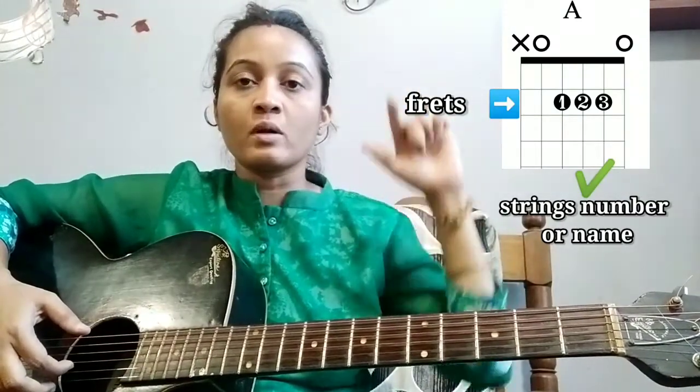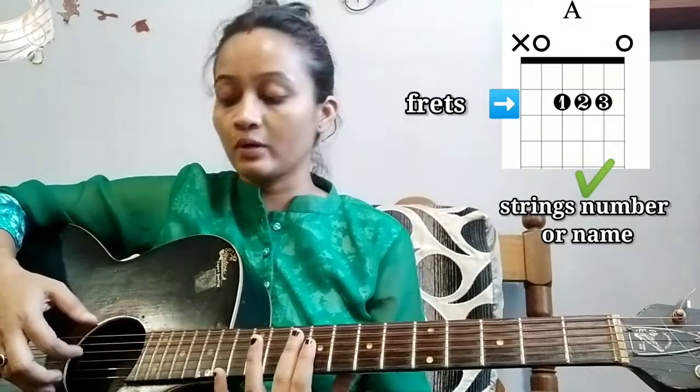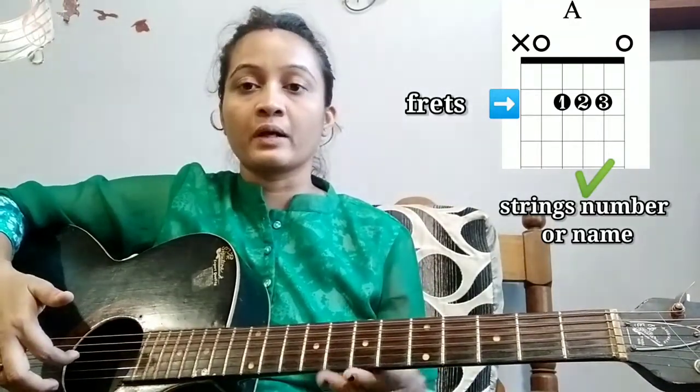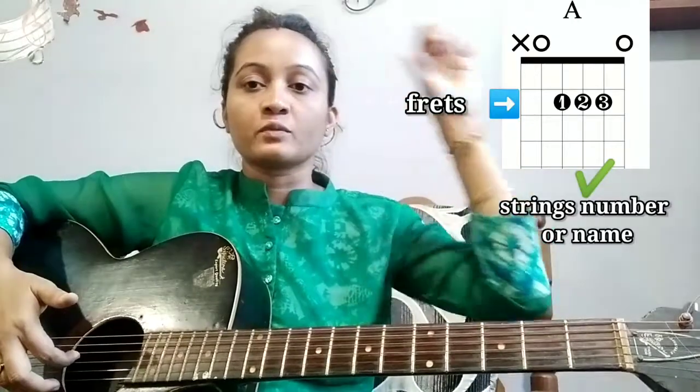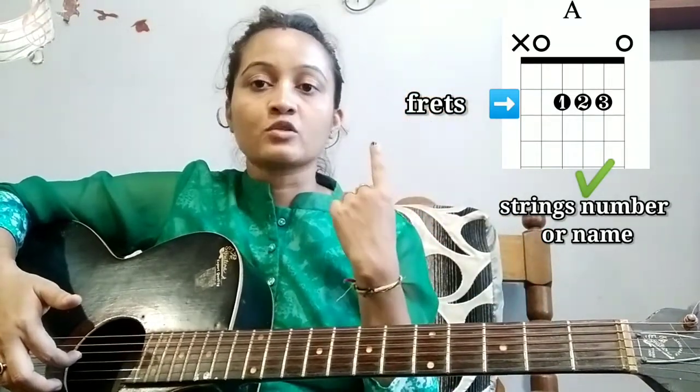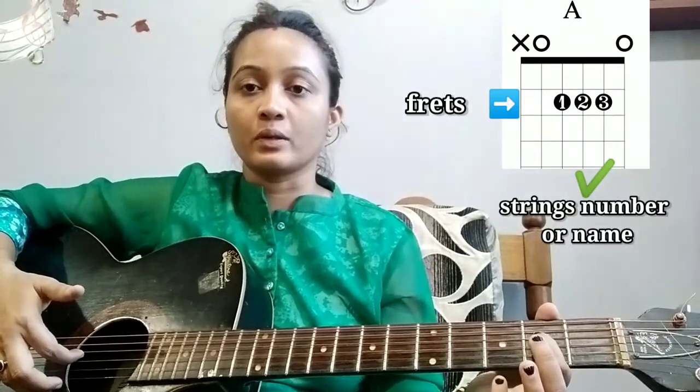Next, the fourth line means our fourth string. The fourth string — first box no, second box — the middle point has number 1. One means our first finger. So the first finger holds: fourth string, second fret.